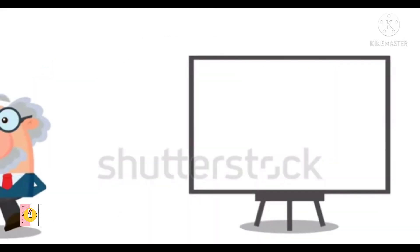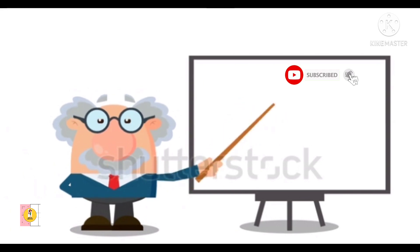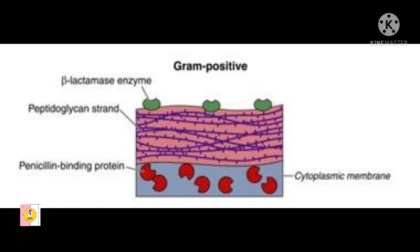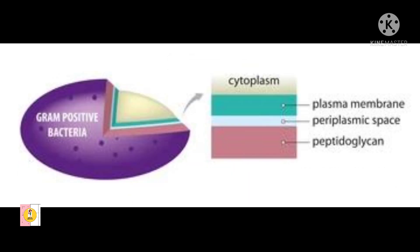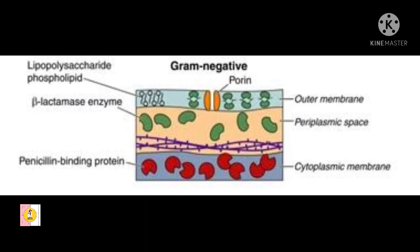Gram positive bacteria have a thick peptidoglycan layer — that is the most important part of the cell wall — and no outer lipid membrane. Because of this thick layer, gram positive bacteria make a positive result in the gram staining test. Examples are Streptococcus and Staphylococcus. Gram negative bacteria, on the other hand, have a thin peptidoglycan layer in their cell wall.